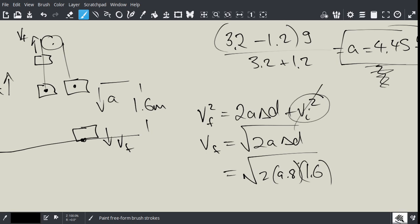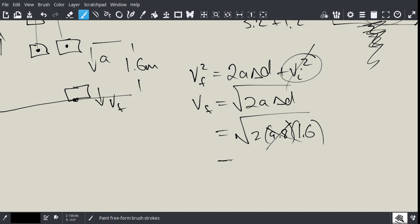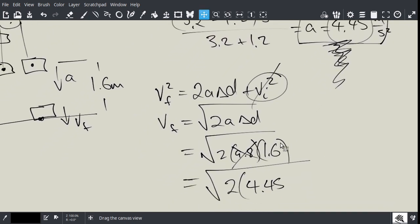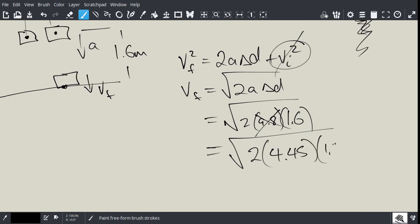Actually, correction, this is not 9.8. The acceleration was right here. It was 4.45, so let me fix that. So it's the square root of 2 times 4.45 from there. And now we multiply that by 1.6. And now let's put that through our calculator. So we got an answer of approximately 3.8 or 3.77 meters per second. That's our final velocity.